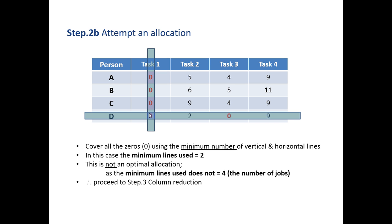We now look at the allocation. We want to find out the minimum number of lines - vertical or horizontal - that we can use to cover all the zeros on that particular table. I could draw a line in this column and a line in this row, one vertical and one horizontal, and that will cover all the zeros using only two lines.